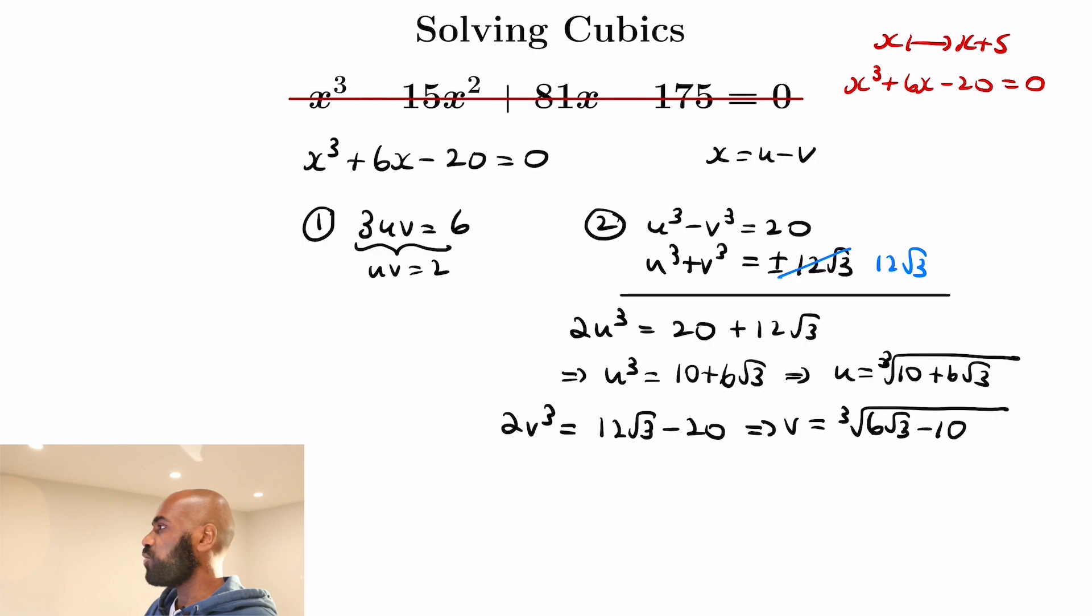Great, so we have what u minus v is, and so we get that x is u, the cube root of 10 plus 6 root 3, minus v, which is the cube root of 6 root 3 minus 10.